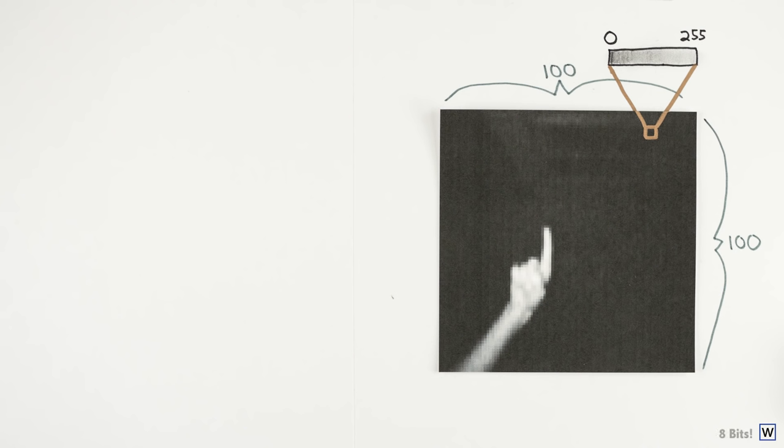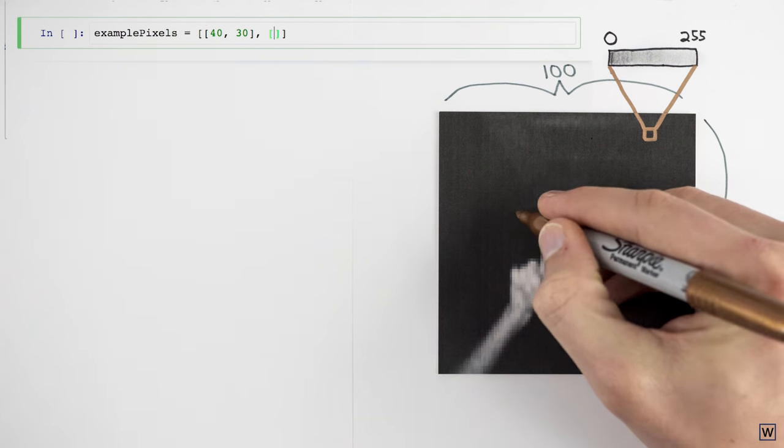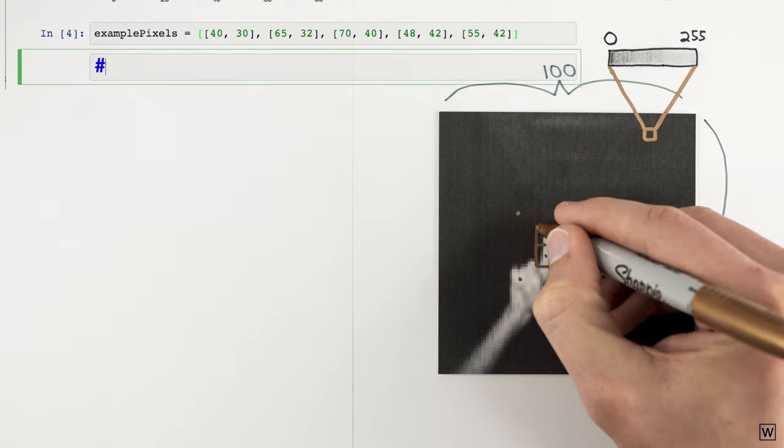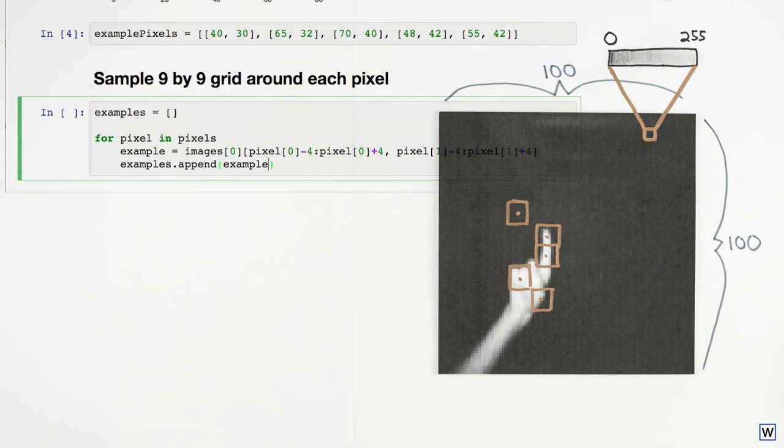We can now begin to think about how to count the number of fingers in our images. To count fingers, we first need to find them. More specifically, we would like to know which pixels in our image belong to fingers. Let's consider a few example pixels. For each pixel, we certainly don't need to consider the entire image to decide if the pixel belongs to a finger or not, so we'll focus our problem by sampling a 9x9 grid around each example pixel.